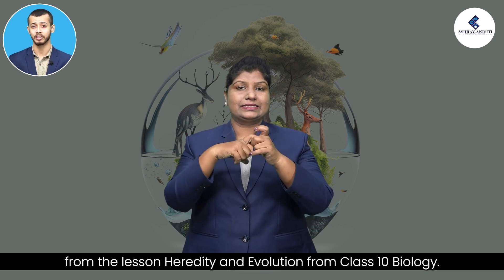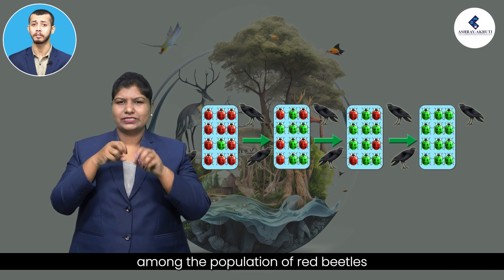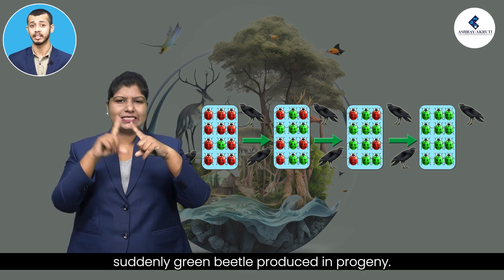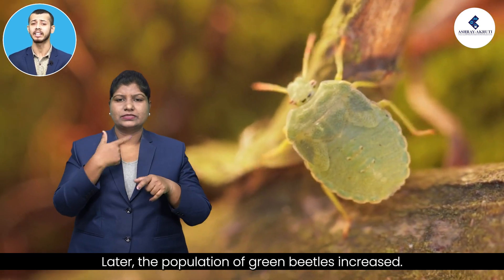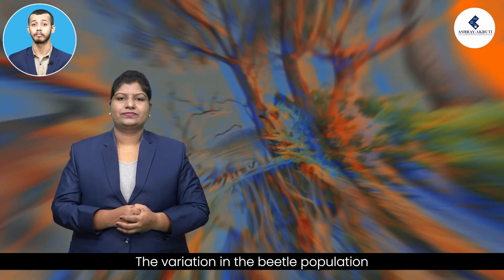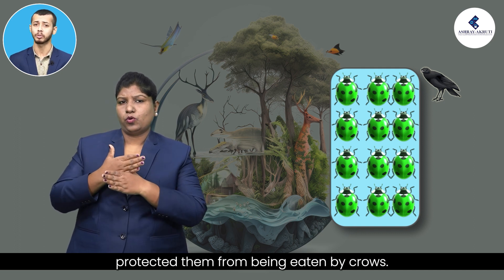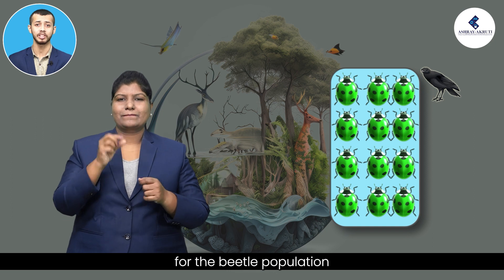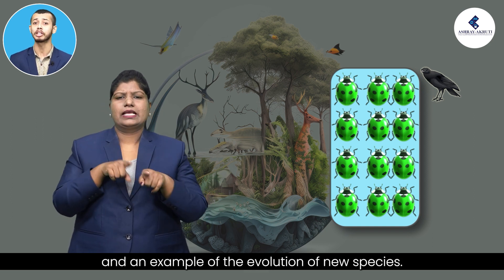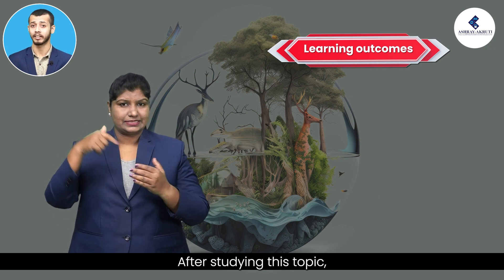In this video, we will explain the topic of speciation and evidence of evolution from the lesson heredity and evolution from class 10 biology. Recall that among the population of red beetles, a green beetle was suddenly produced in the progeny. Later, the population of green beetles increased. The variation producing green-colored beetles protected them from being eaten by crows, giving them an advantage — an example of the evolution of new species.